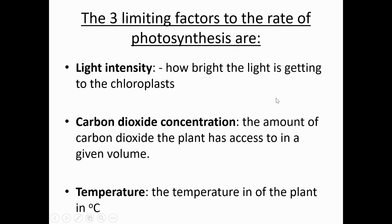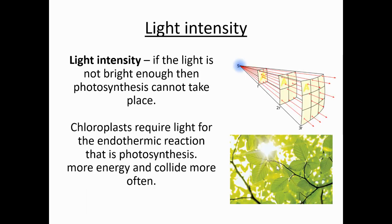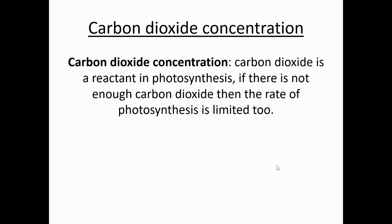Light intensity is how bright the light is getting to the chloroplasts. Carbon dioxide concentration is the amount of CO2 the plant has access to in a given volume — for instance, how much CO2 is in a litre of air, expressed as a percentage. Temperature is how hot it is, measured in degrees Celsius. If the light is not bright enough, photosynthesis can't take place — chloroplasts require light for the endothermic reaction. Carbon dioxide is a reactant, so if there's not enough CO2, the rate of photosynthesis is limited too.